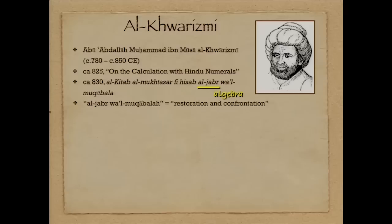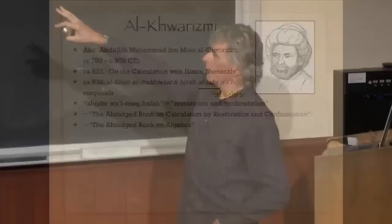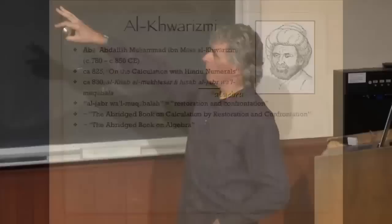That phrase at the end of the title really means 'restoration and confrontation' — terms we saw in connection with Diophantus — the way of solving an equation: move things from one side to the other and remove equal terms from both sides. A modern scholarly translation of the whole title would be 'The Abridged Book on Calculation by Restoration and Confrontation,' though it's usually known among scholars as just 'The Abridged Book on Algebra,' because restoration and confrontation is simply the key method for solving equations — so it's algebra.